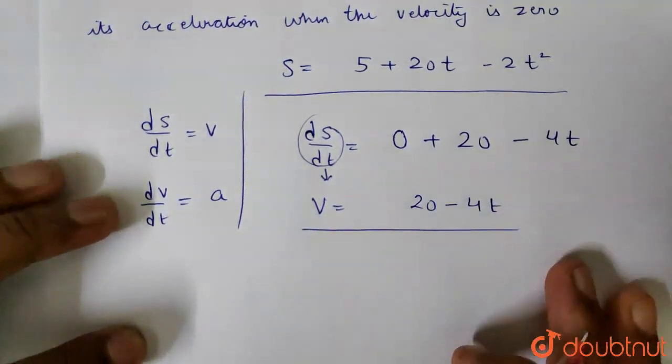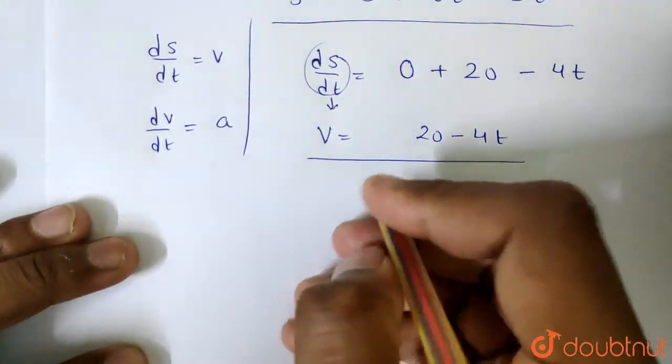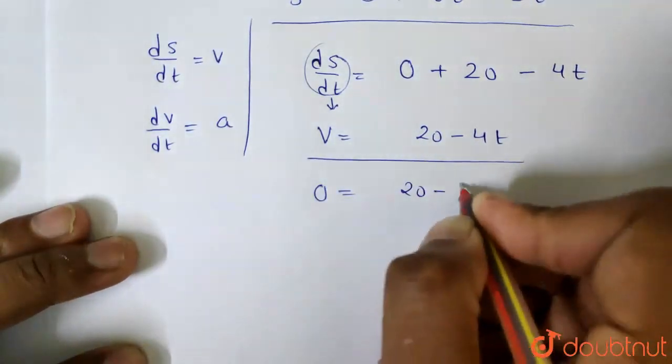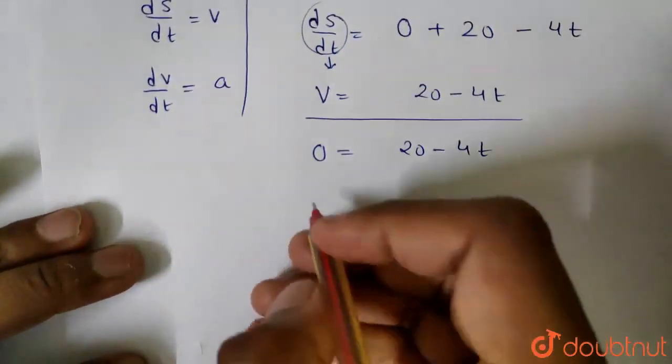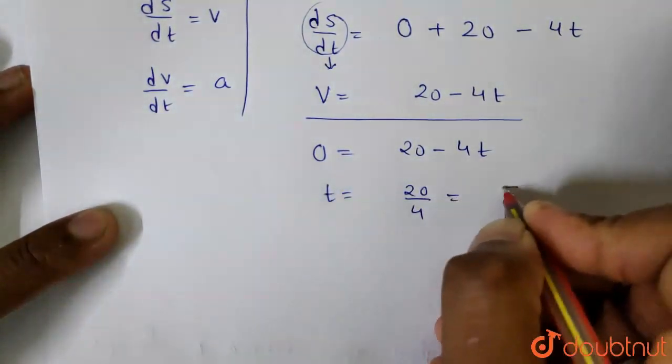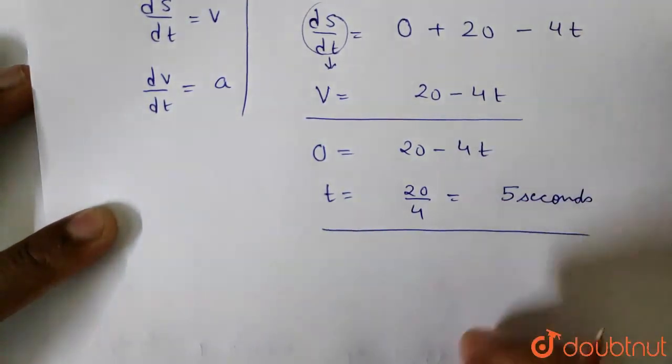Now we need to find acceleration when velocity is 0. When velocity is 0, let's check. So 0 = 20 - 4t. We need to find the time value. So t = 20/4. Therefore, t = 5 seconds when velocity is 0.